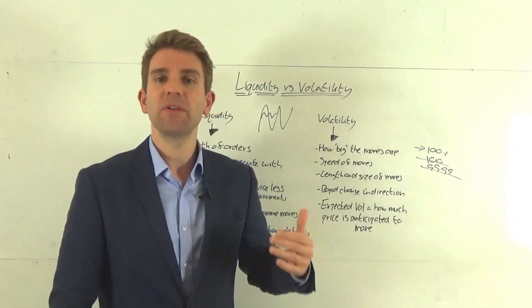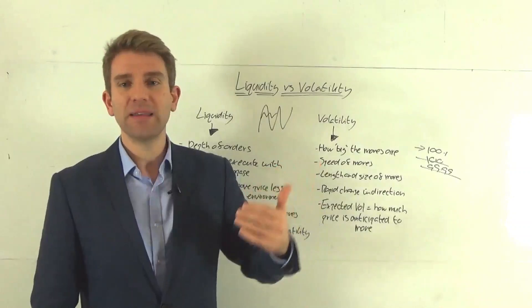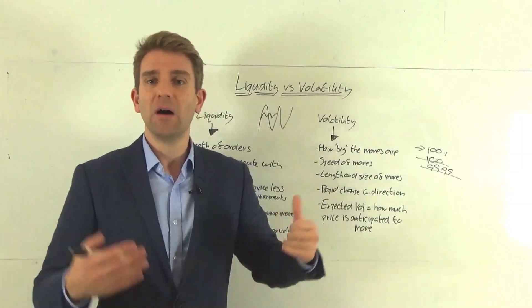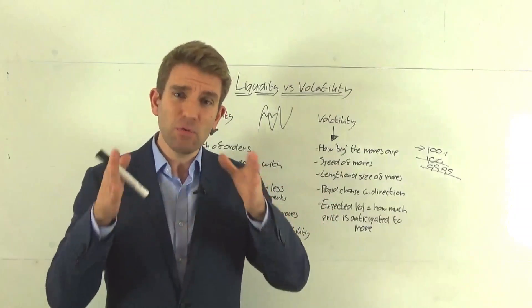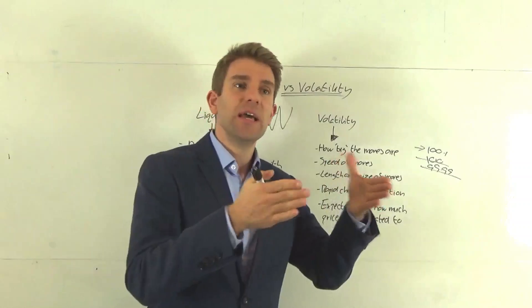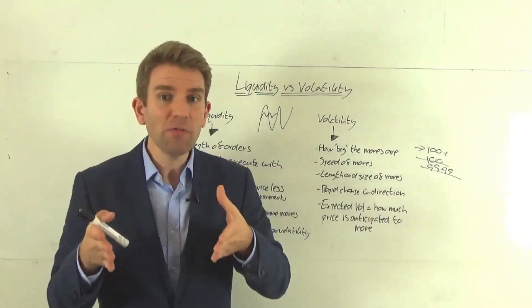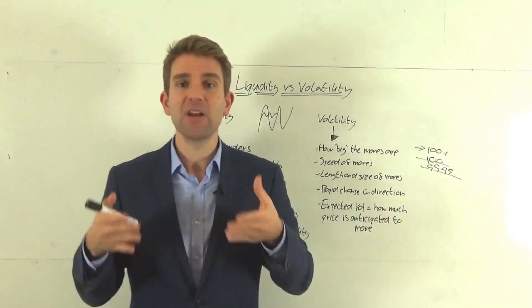If you see something's ripping up and down 10% in a day, extremely volatile. Something that's going up 0.1% a day or down 0.1% a day, very low volatility. Now, obviously we've got to benchmark that against history.